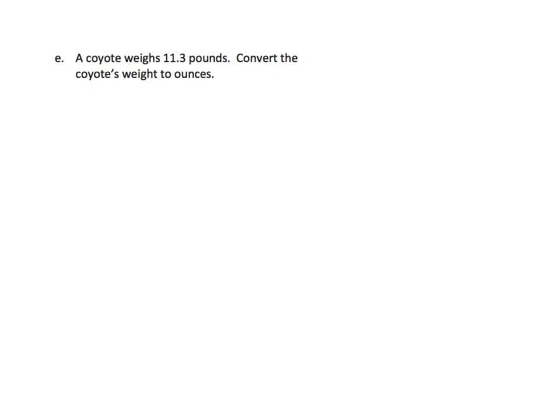One last example. This is really quite a simple lesson. It says a coyote weighs 11.3 pounds. Convert the coyote's weight to ounces. Sticking with our procedure. 11.3 pounds equals 11.3 times 1 pound equals 11.3. How many ounces in a pound? That would be 16.